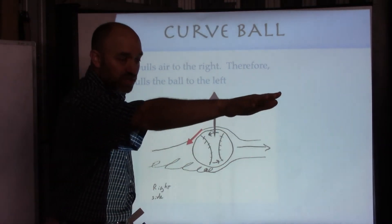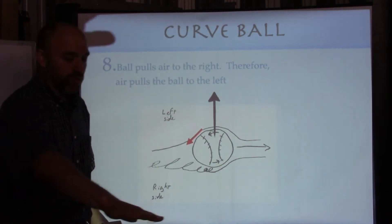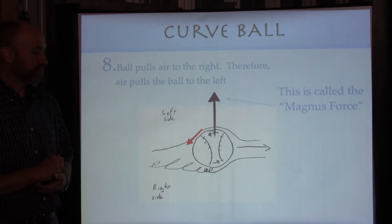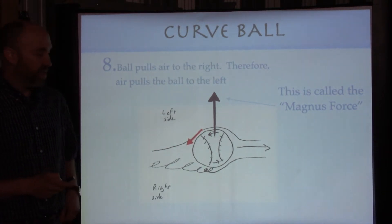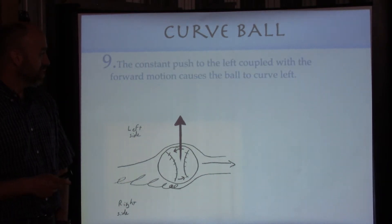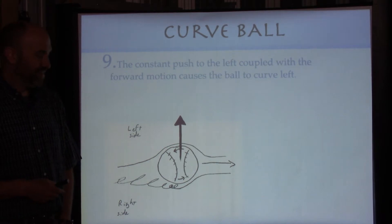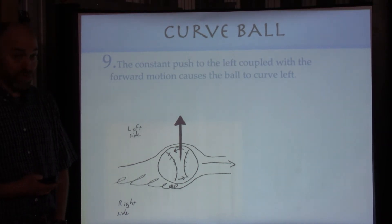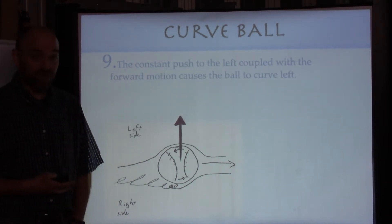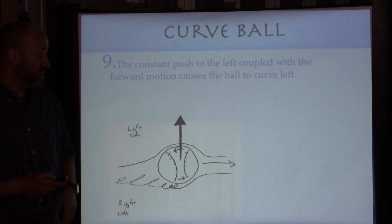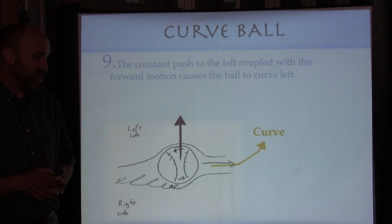When the pitcher throws it, it looks like it's going to go to the right of the strike zone, but then it pulls to the left because of this force. This force is called the Magnus force, and it pulls the ball to the left. Because of this force combined with the forward speed, the ball ends up curving. People figured this out by accident - they did it a few times and realized they could do it on purpose. It's not just baseball; you do it in soccer and cricket, where it's especially significant.